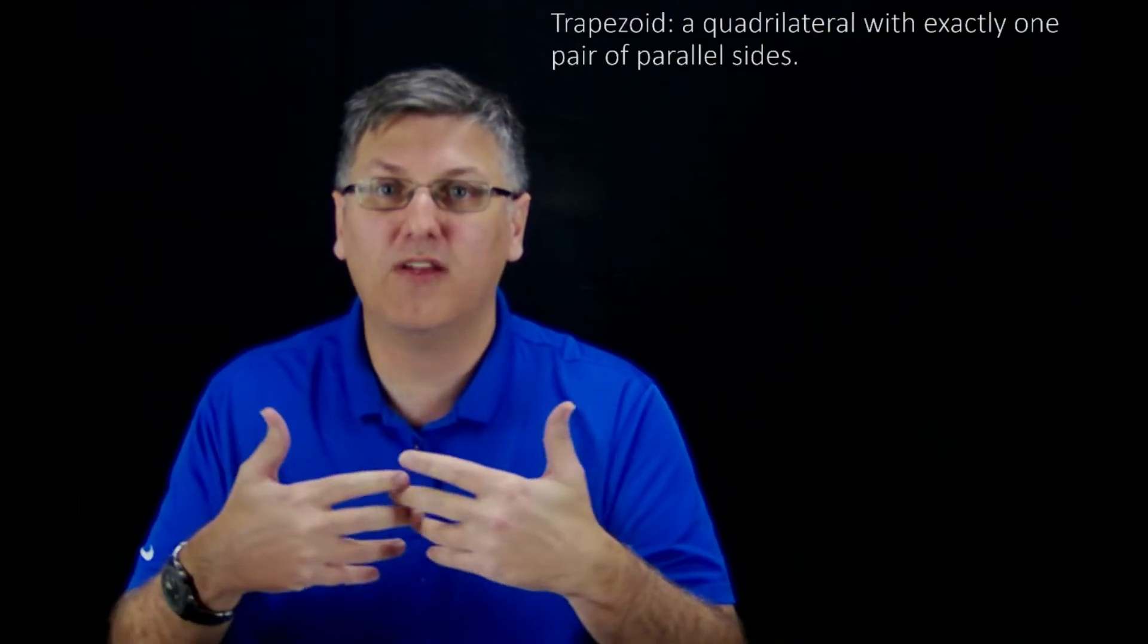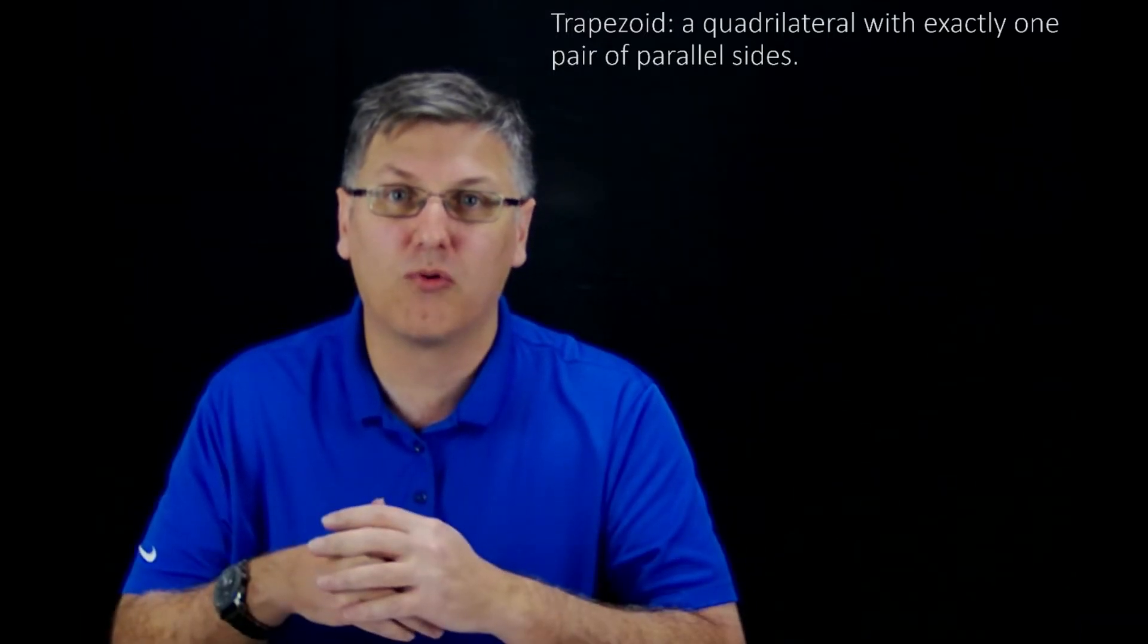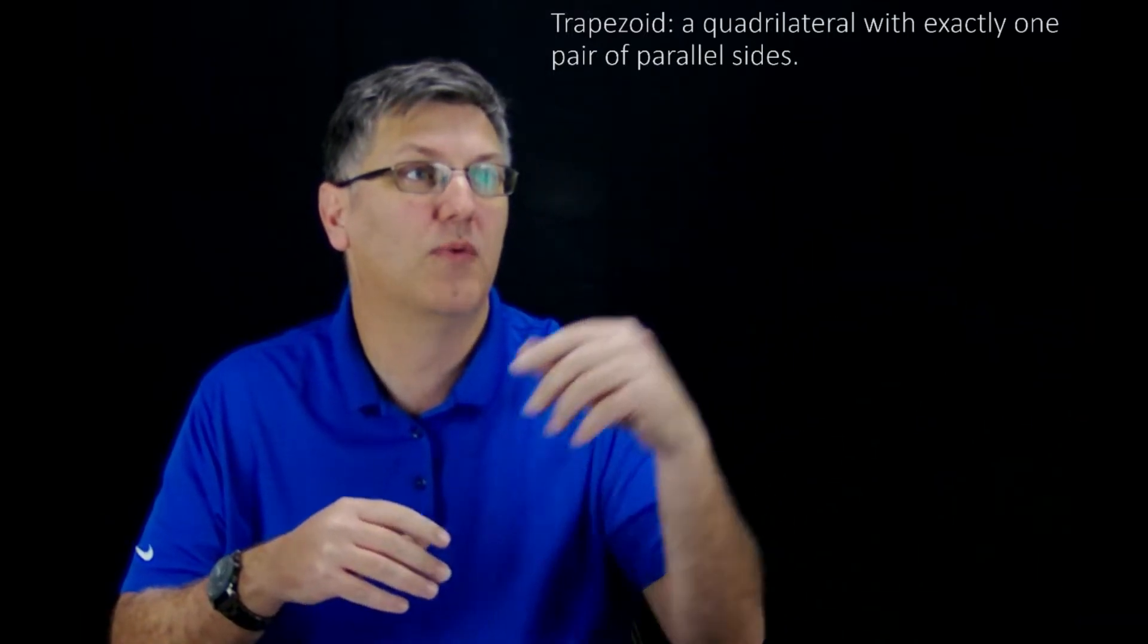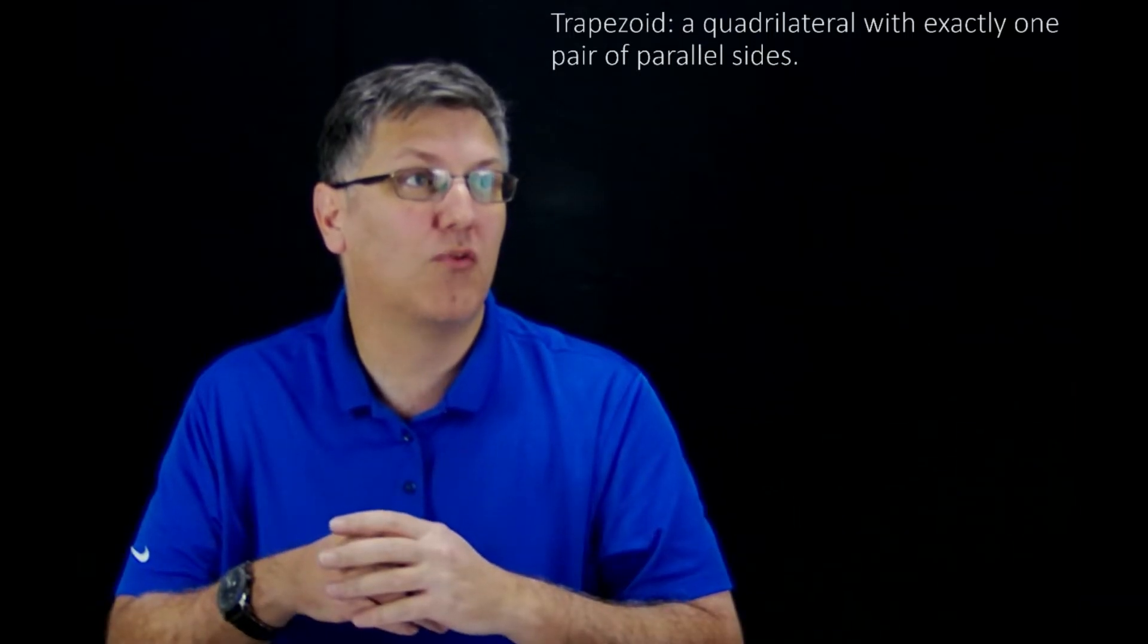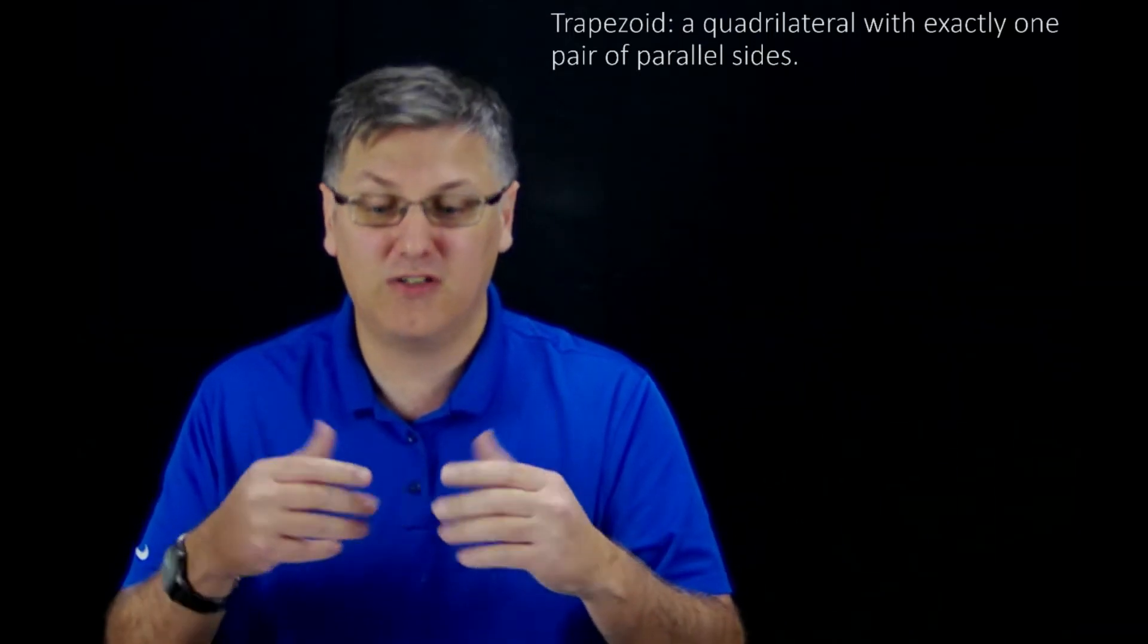All right, let's go ahead and look at the first special quadrilateral we're going to have, which is the trapezoid. A trapezoid is simply a quadrilateral with exactly one pair of parallel sides.